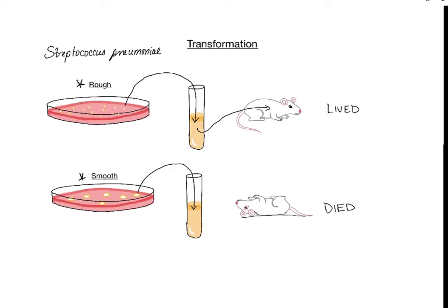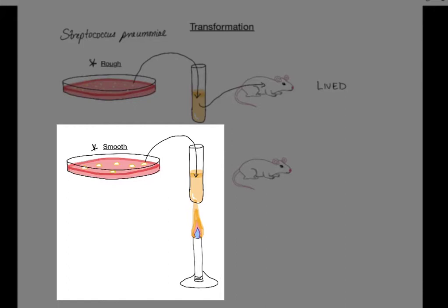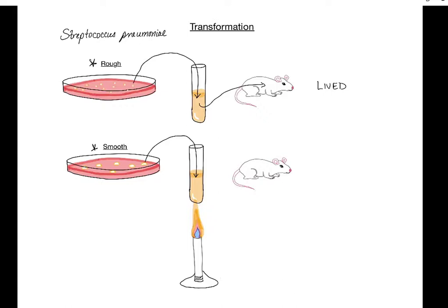Frederick Griffith performed a third experiment. He took smooth bacteria, grew them up in a broth, and then put that broth under a flame for an extended period of time to kill all of the bacteria. He then injected those dead Streptococcus cells into the mice, and the mice lived, because there were no living pathogenic bacteria in that culture.